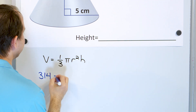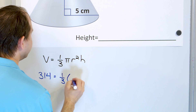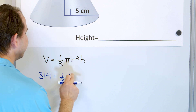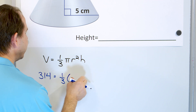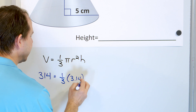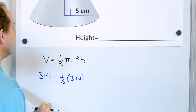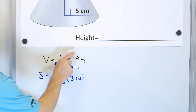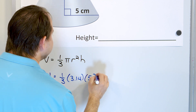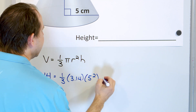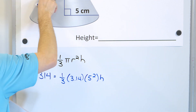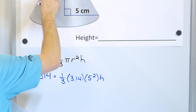We have one-third, then we multiply by pi — but instead of just putting the symbol for pi, we're going to use two decimal places: 3.14. That's an approximation, of course. r squared is 5 squared because the radius is 5, and the height is the only thing left — that's what we're trying to find. We've labeled the height x,